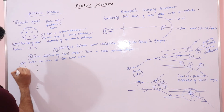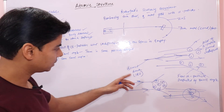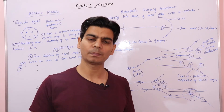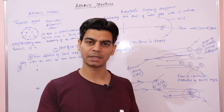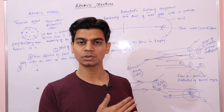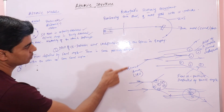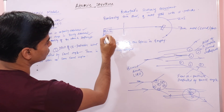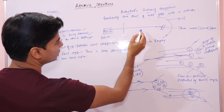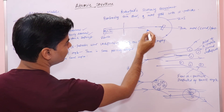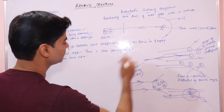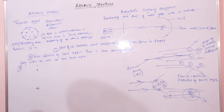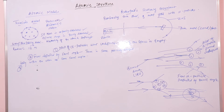Now let's come to the third point. Very few particles were bounced back - that is, they were deflected back 180 degrees into the source. These alpha particles were deflected back toward the source of alpha particles. What could be the reason that these alpha particles are bounced back?